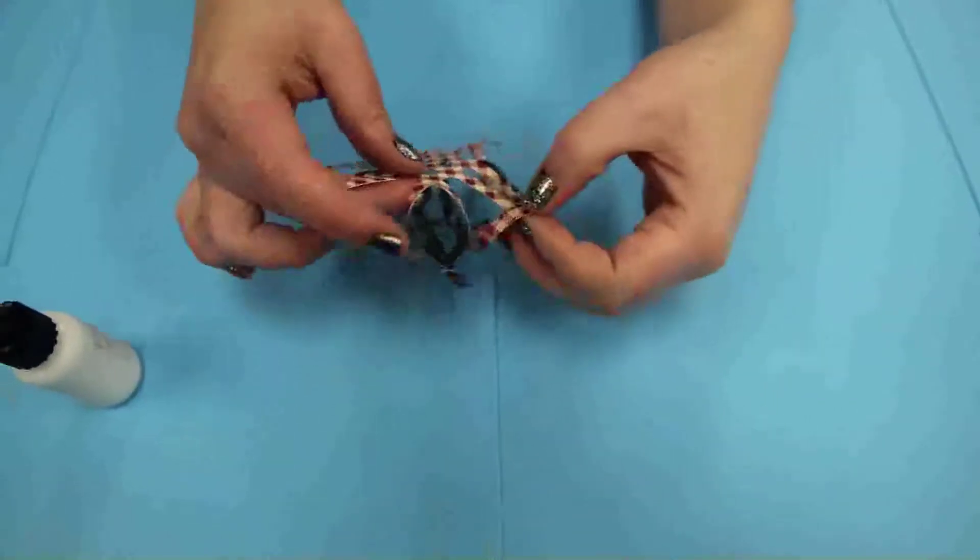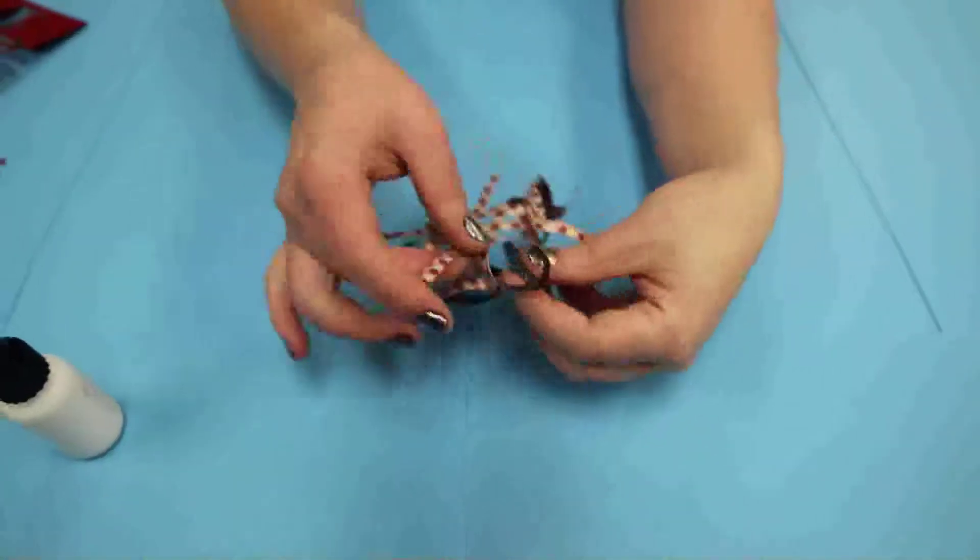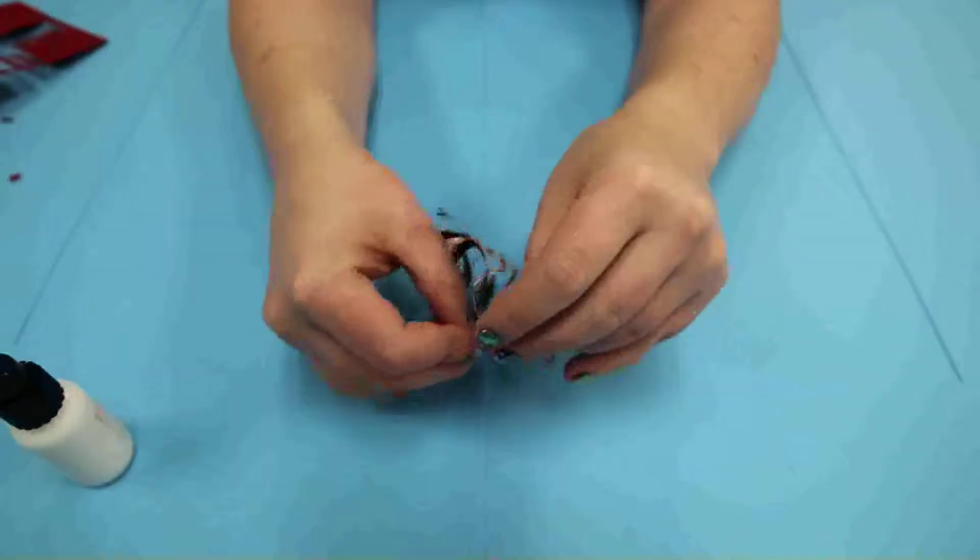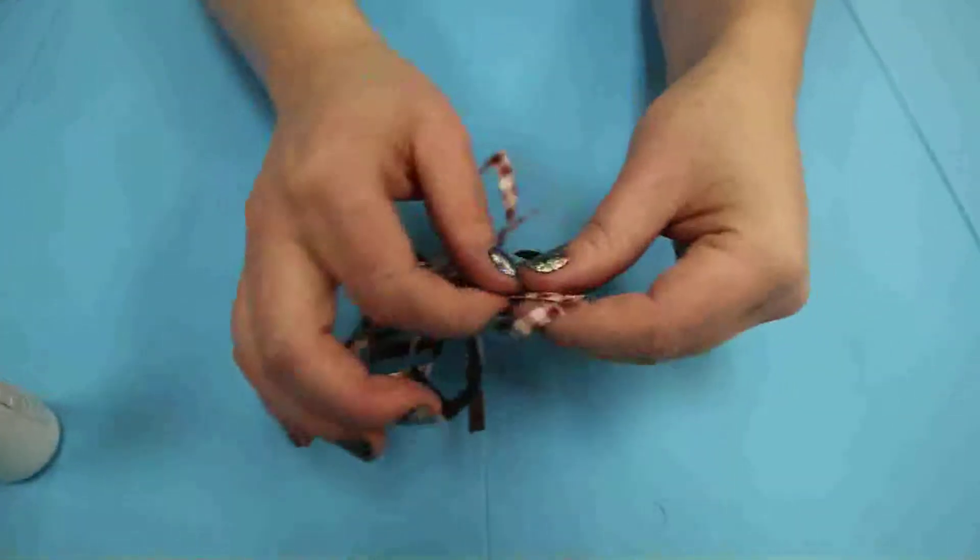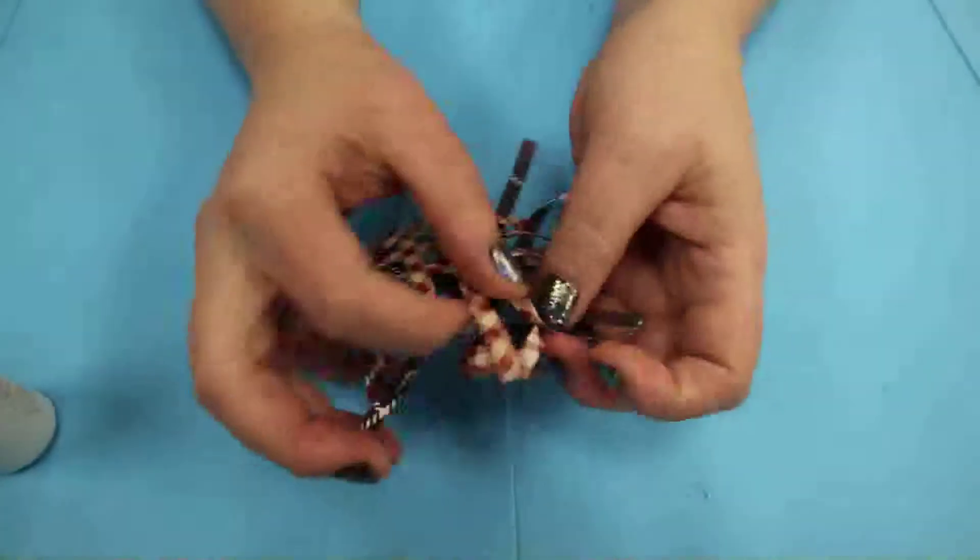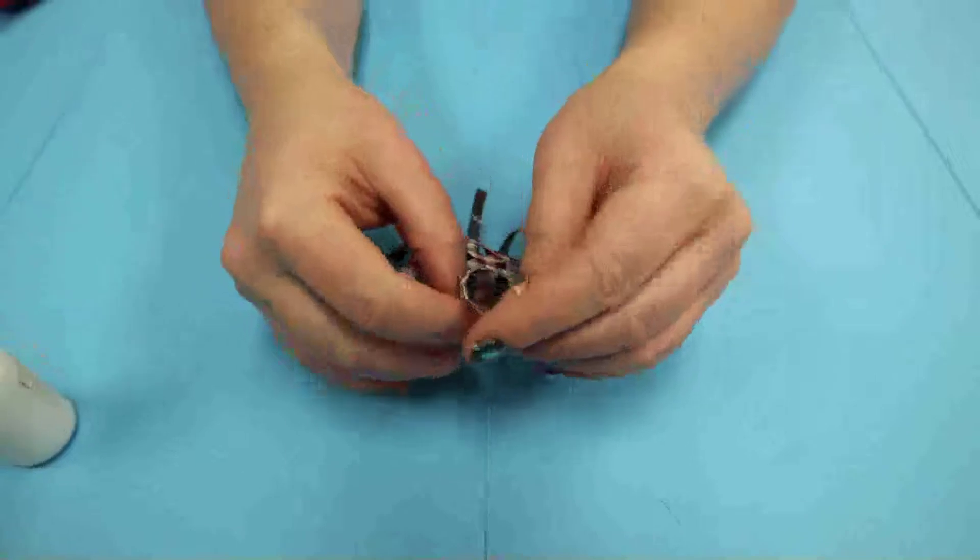So now what you're going to do is you're going to take these straight ones and you're going to put it through the loops on the other one. And you're going to do this all the way around the die. So I'm just going to do that real quick.